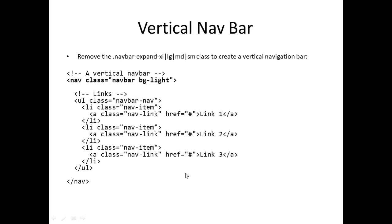For a vertical navbar, if we want a vertical navigation bar, we simply remove the navbar-expand class. This is similar to the previous one except that we have removed that class.